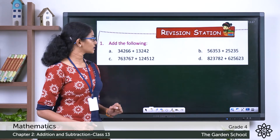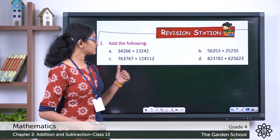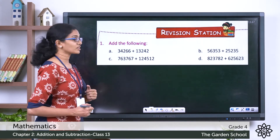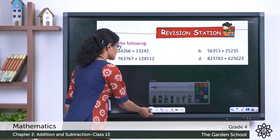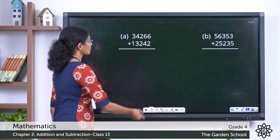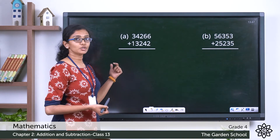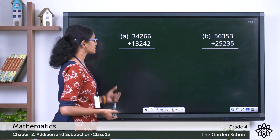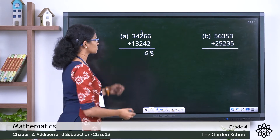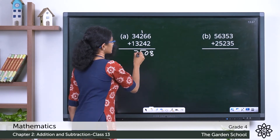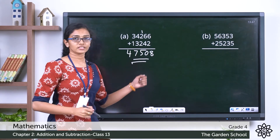Let's move on to the first question: 'Add the following.' There are four questions. The first one is 34,266 plus 13,242. We start the addition from the ones place. Six plus two is eight. Six plus four is ten — carry over one. Two plus two is four, plus one is five. Three plus four is seven. One plus three is four. So the answer to the first one is 47,508.